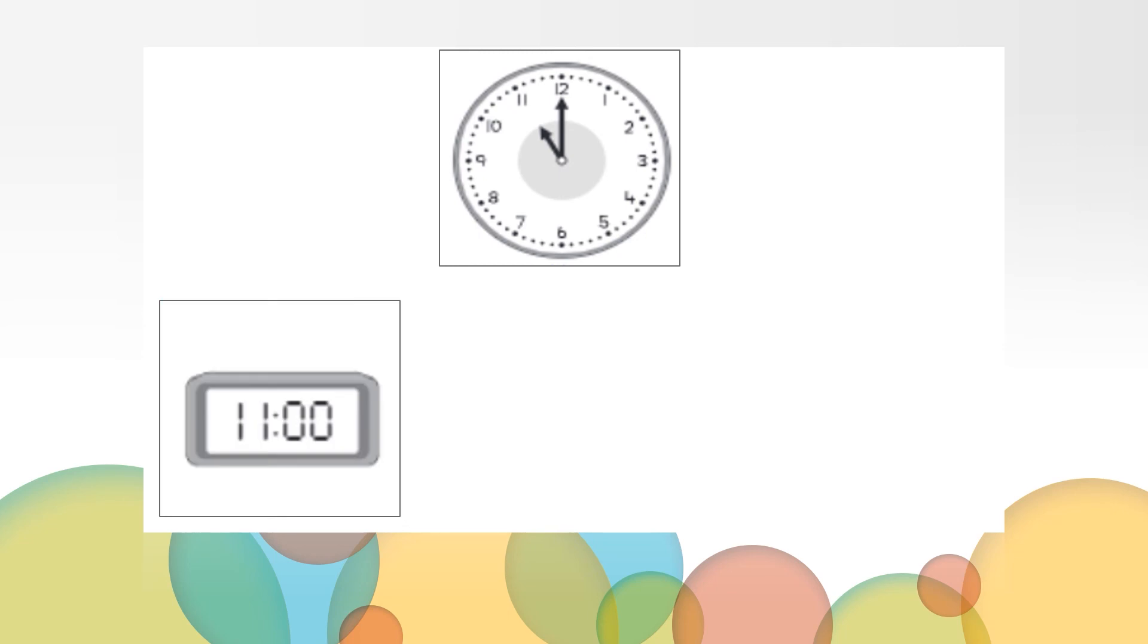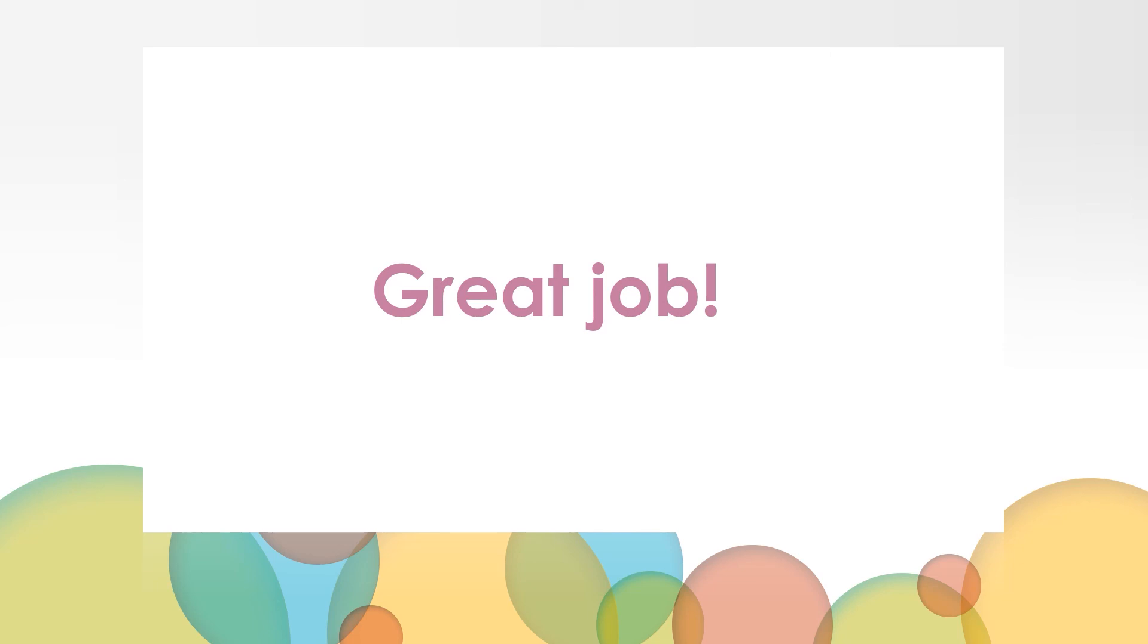I see two cards left. I wonder if they are a match. Let's check. What time does this clock show? I see the hour hand is on the eleven. And the minute hand is on the twelve. This clock shows eleven o'clock. What time is on the digital clock? The numbers to the left of the colon is the hour. And it says eleven. The numbers on the right of the colon are zero, zero, which means it is an o'clock time. This clock shows eleven o'clock. It's a match. Great job. We found all the matches.